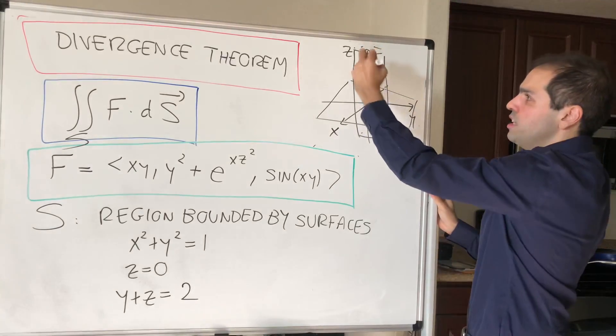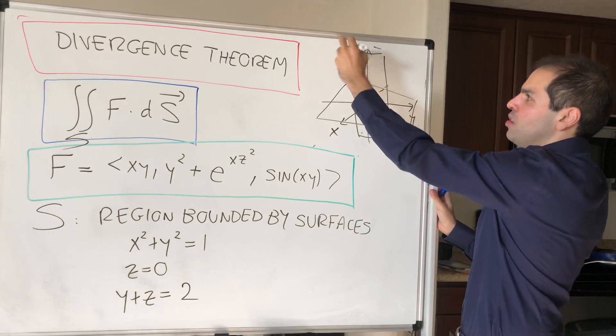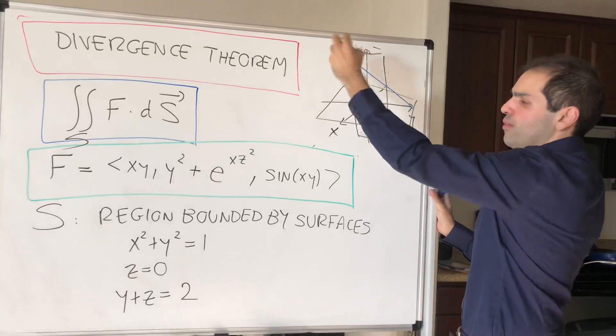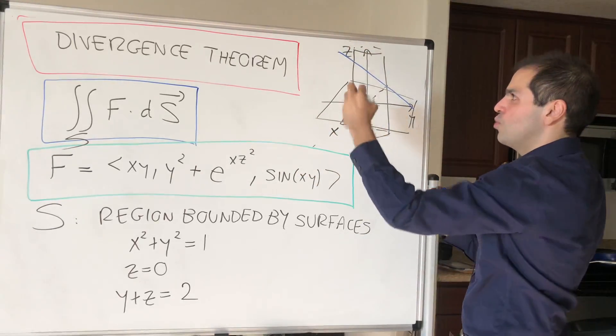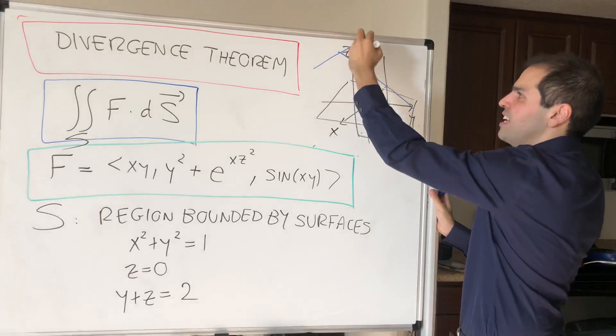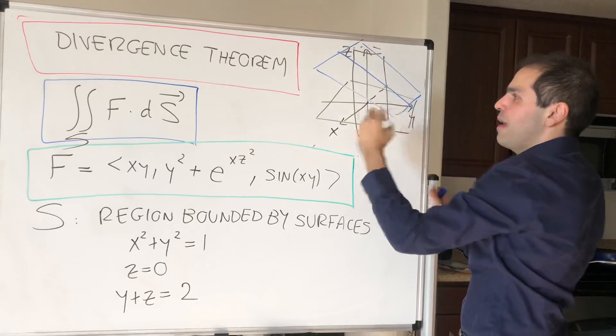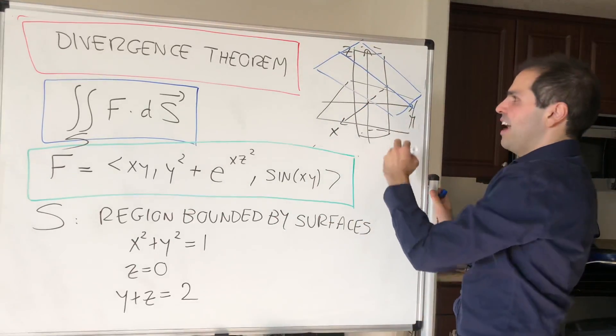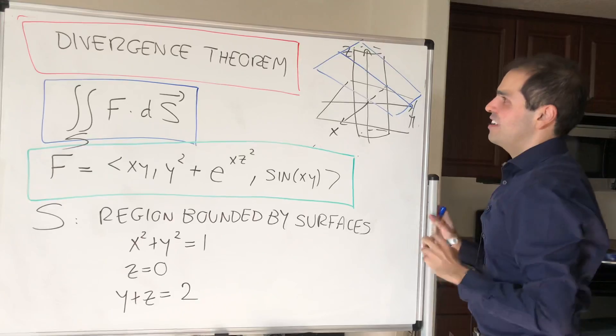Which you can just do by drawing, first of all the line z equals 2 minus y, and just translating it forward and backward because there is this x-direction missing, this x variable missing.